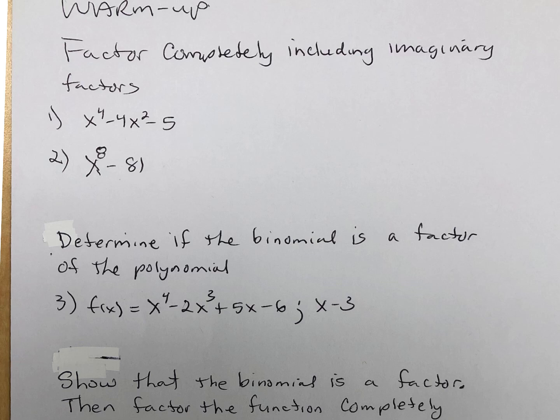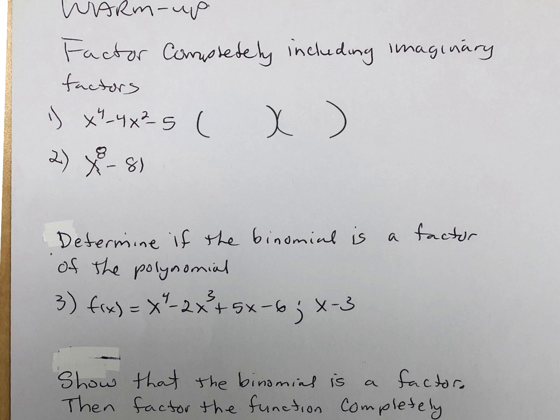This is a little warm-up to get you ready for tomorrow's quiz. We're going to factor completely and include imaginary numbers — remember, that's extra credit. Some of you need all the extra credit you can get, especially in the quiz category. This is a quadratic in disguise: x to the fourth minus four x squared minus five. How is that going to factor?